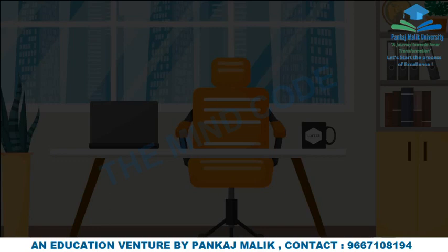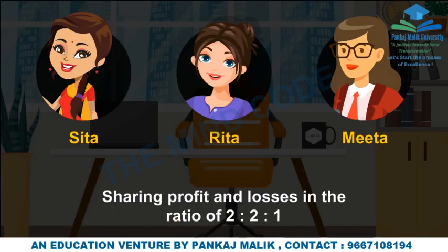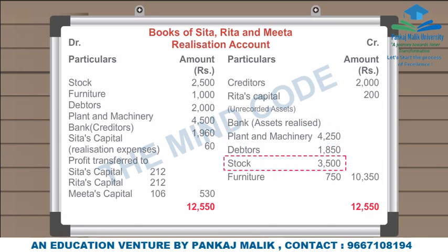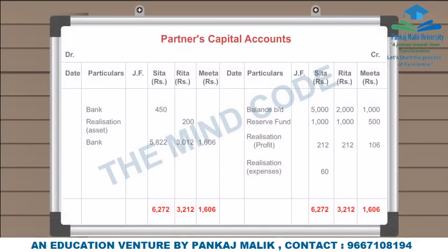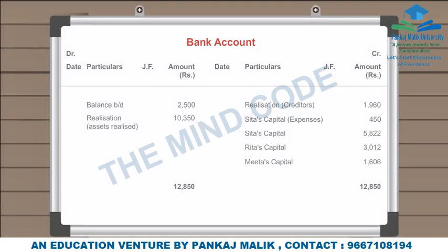Example: Sita, Rita, and Meeta are partners sharing profits and losses in the ratio of 2:2:1. Their balance sheet as on March 31, 2007 is given. They decide to dissolve the business. The following amounts were realized from plant and machinery. Sita agreed to bear all realization expenses; for this service, Sita is paid ₹560. Actual expenses on realization amounted to ₹450. Creditors paid 2% less. There was an unrecorded asset of ₹250 which was taken over by Rita at ₹200. Prepare the necessary accounts to close the books of the firm.